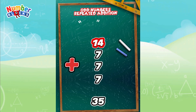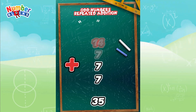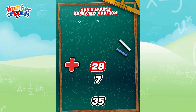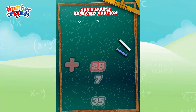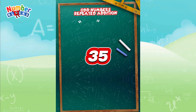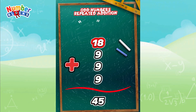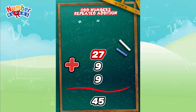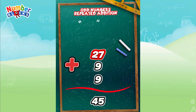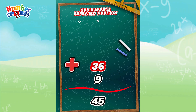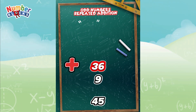Let's try 7 plus 7 is equals to 14. 14 plus 7 is equals to 21. 21 plus 7 is equals to 28. And finally, 9 plus 9 is equals to 18. 18 plus 9 is equals to 27. 27 plus 9 is equals to 36. 36 plus 9 is equals to 45.